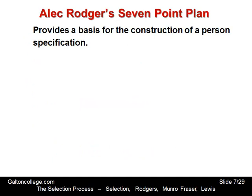The Alec Rogers seven-point plan provides a basis for the construction of a person specification. This is about looking at the personal characteristics and personal attributes that are particularly desirable in terms of a job application — what the company is looking for. The company should try to set out clearly what it's looking for so it can make quite an objective selection from amongst the candidates.